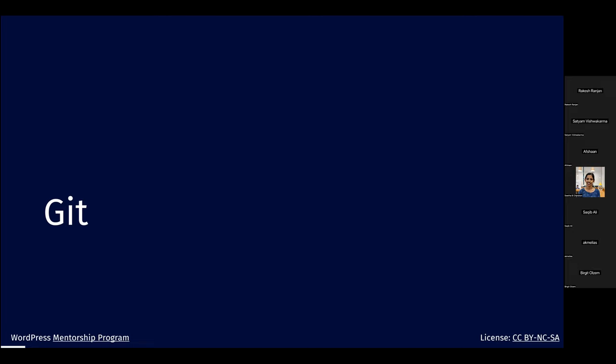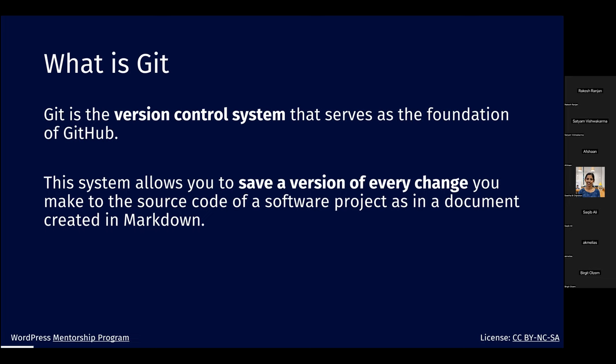Git is a version control system. In WordPress we also use SVN, but Git is the main one behind GitHub. Git allows you to save everything that changes — if somebody changes a comma, a text, or code, it will be recorded so you can check all the changes in the platform.